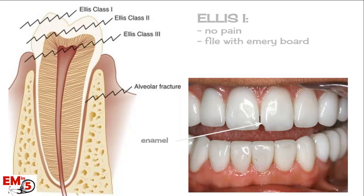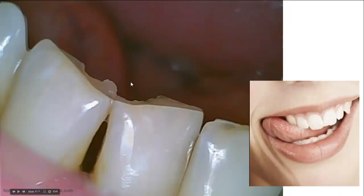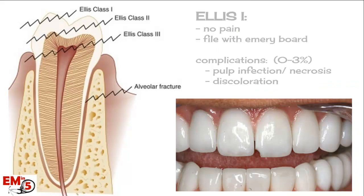When talking about a dental fracture, there are three classifications based on how deep the fracture line goes. LS1 is the least serious — it just hits the enamel. It's usually not that painful, and your main treatment is just to file it down. You can actually use an emery board just like you'd use for fingernails, getting rid of sharp edges so the tongue or lip don't get lacerated. There's a very low complication rate — 0% to 3% — generally pulp infection, pulp necrosis, or discoloration. Just have them follow up with the dentist as needed.